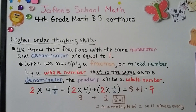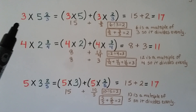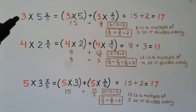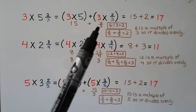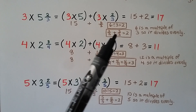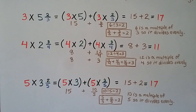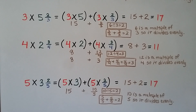Let's try that again with 3 times 5 and 2 thirds. We have a 3 as the whole number and a 3 as the denominator, so we know the answer will be a whole number. We do 3 times 5 to get 15, then 3 times 2 thirds: multiply 3 to numerator 2 to get 6 thirds. 6 divided by 3 is 2 — that's 3 thirds plus 3 thirds equaling 2. The numerator 6 is a multiple of denominator 3, so it divides evenly. Our answer is 15 plus 2, which is 17 — a whole number.